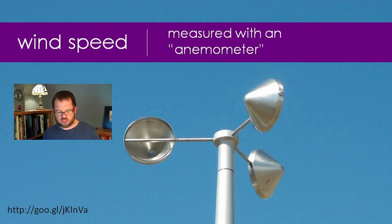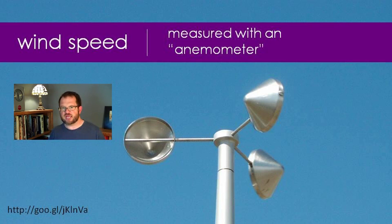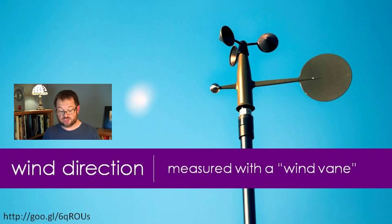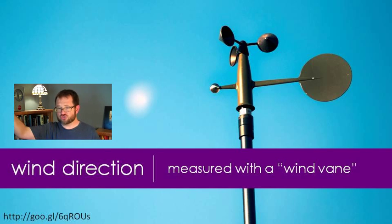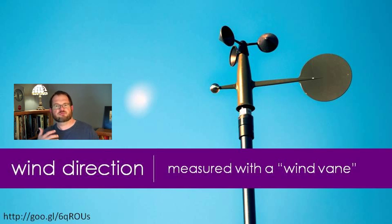At the surface, we measure winds using an instrument called an anemometer. The wind speed is determined by the anemometer — that little propeller cup thing that spins and measures wind speed. Wind direction is measured with a simple instrument called a wind vane. Aloft, it's a more complicated business. When we launch weather balloons, we track them either by using geometry based on their location or by using GPS at known locations along the way, and from that information we get the wind's speed.